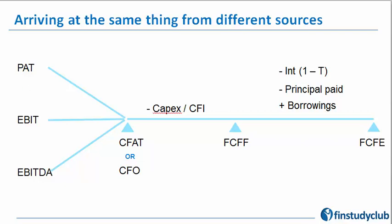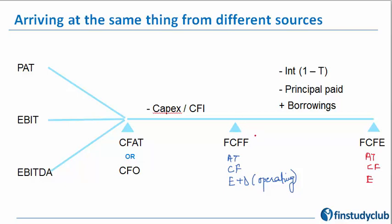A quick recall: free cash flow to the firm was the after-tax cash flow that the firm was able to generate after making all other payments belonging to both equity and debt — in other words, it is operational in nature since no non-operational deduction has been made. On the other hand, free cash flow to equity was again an after-tax cash flow — the pool generated only from the point of view of equity, meaning interest and principal have already been deducted.